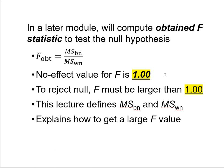Since we generally hope to reject null hypotheses, in order to reject the omnibus null hypothesis in ANOVA, your obtained F statistic must be larger than 1.0. This lecture will focus on defining mean square between (the numerator) and mean square within (the denominator), and will explain what you need to do to increase your chances of getting a large F statistic.